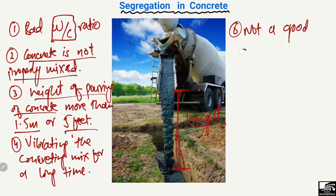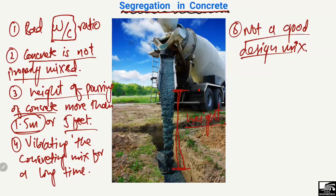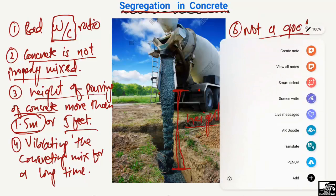The fifth reason is not having a good design mix ratio. It is important that the components of concrete are in proper proportion to each other to avoid segregation. In summary, we can avoid segregation by maintaining pouring height less than 1.5 meters or 5 feet, providing a good design mix, not over-vibrating the concrete, and ensuring concrete is properly mixed before pouring. Don't forget to subscribe to our channel for daily civil engineering videos. Thank you for watching.